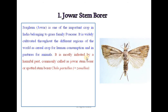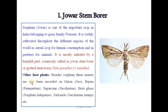It is mostly infested by a harmful pest commonly known as jawar stem borer or spotted stem borer, Chilo partellus, also called Chilo zonellus. The other host plants besides sorghum include maize, bajra, sugar cane, baru grass, sarkanda, etc.